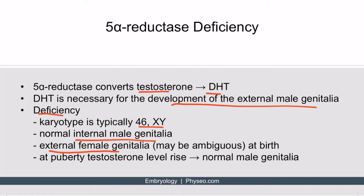However, the patient will have external female genitalia at birth, so they will look like a girl. Oftentimes the genitalia may be ambiguous, meaning there may be an enlarged clitoris or labia. These children are often undiagnosed and are initially raised as females. At puberty, testosterone levels rise, resulting in the development of normal male genitalia.